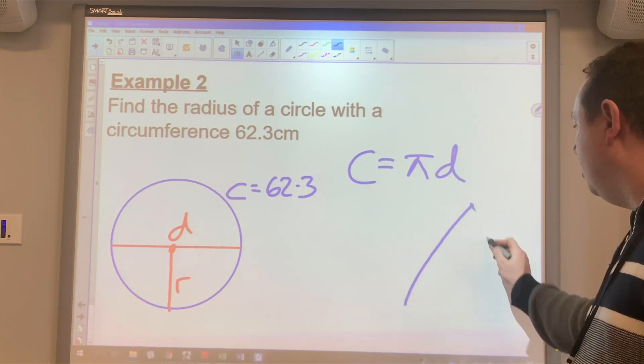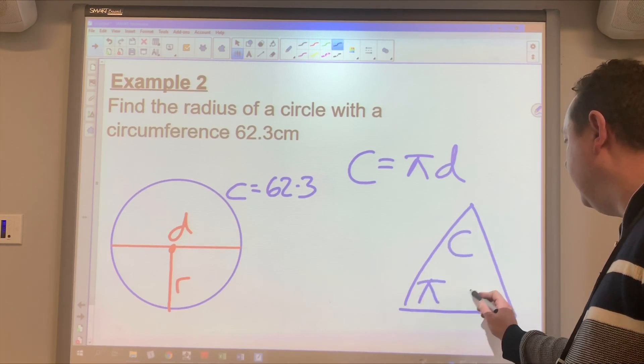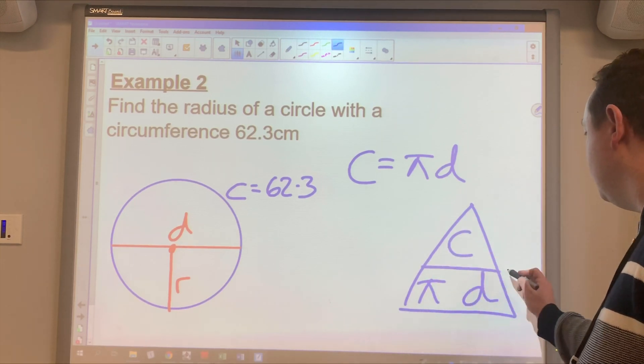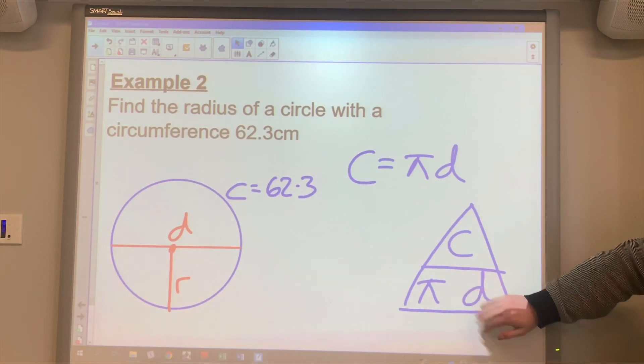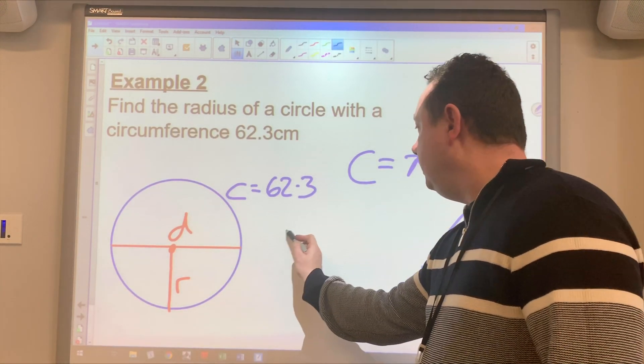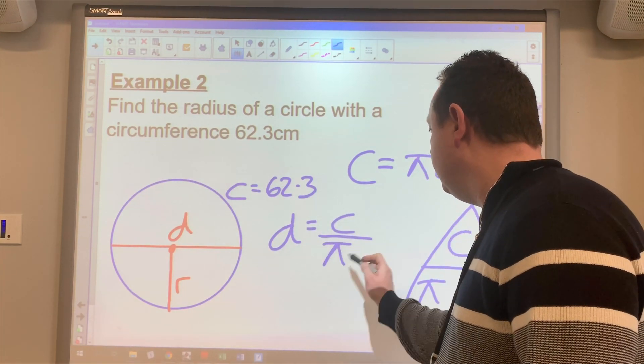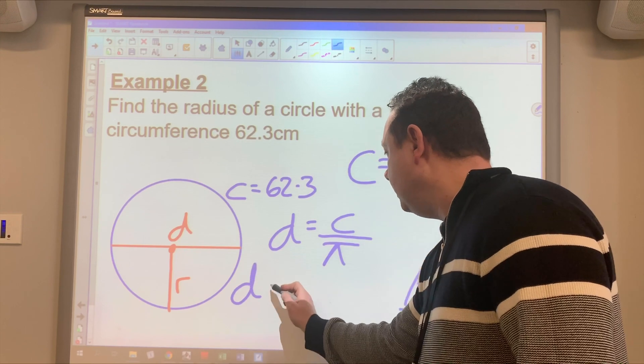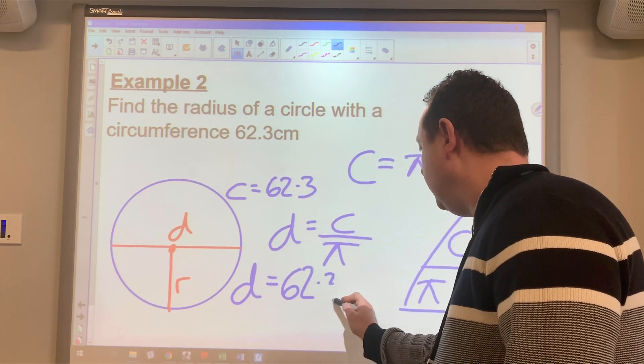I draw my triangle so I can rearrange it. C, pi and D. I cover up D because D is what I want to find out. So it says C over pi. D equals C over pi. So the diameter for this question is going to be 62.3 divided by pi.